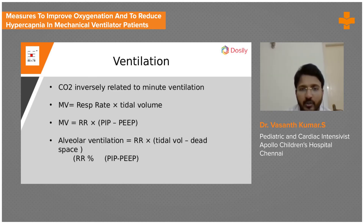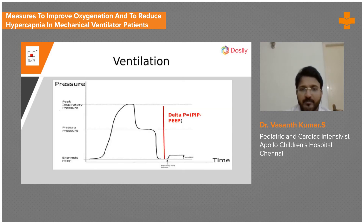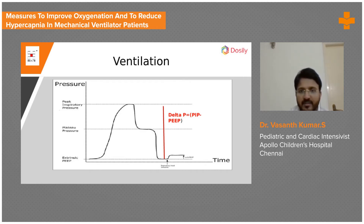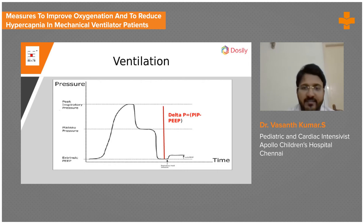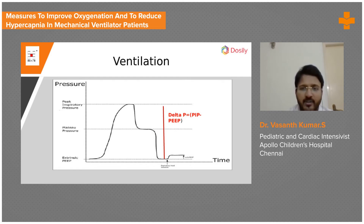Looking at the pressure-time graph again: this is the peak inspiratory pressure and this is the PEEP. There is something called delta P — the driving pressure — which is the pressure that drives air into the lungs. PIP minus PEEP equals driving pressure. You always need this gradient for air to flow into the lungs, and this gradient determines minute ventilation.